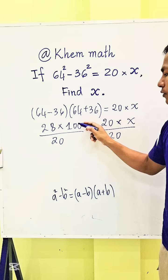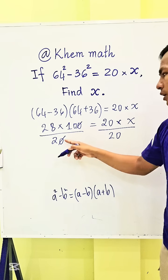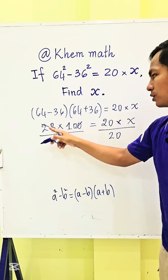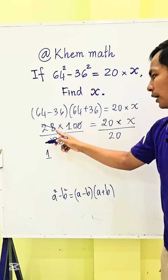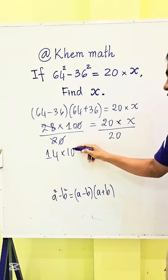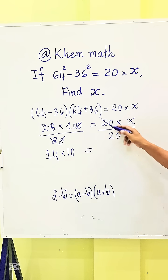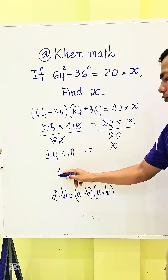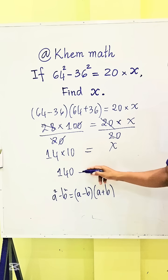We simplify and get 14 times 10 equals x. So we get 140 equals x.